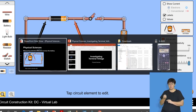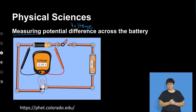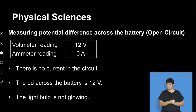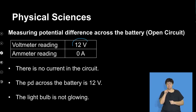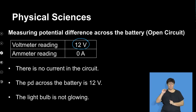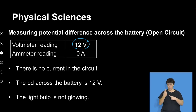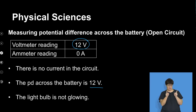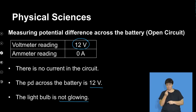Going back to our slides: as far as measuring the potential difference or the voltage, the voltmeter reading is 12 volts. The ammeter reading is zero amps — there is no current in the circuit. The potential difference across the battery is 12 volts, and the light bulb is not glowing.